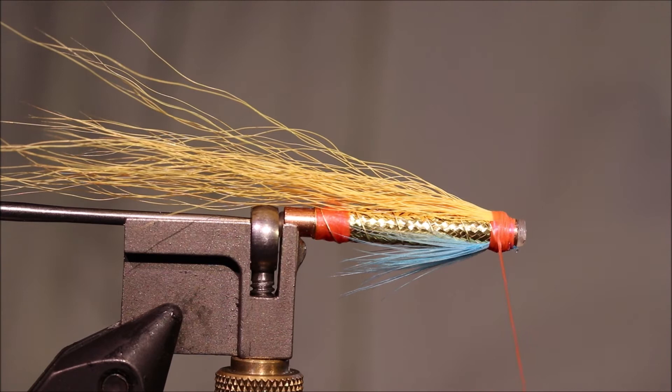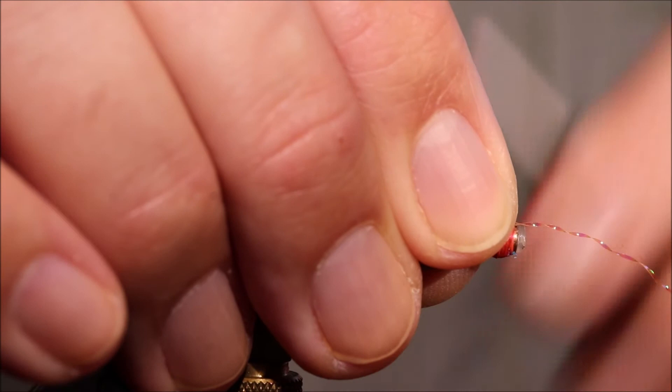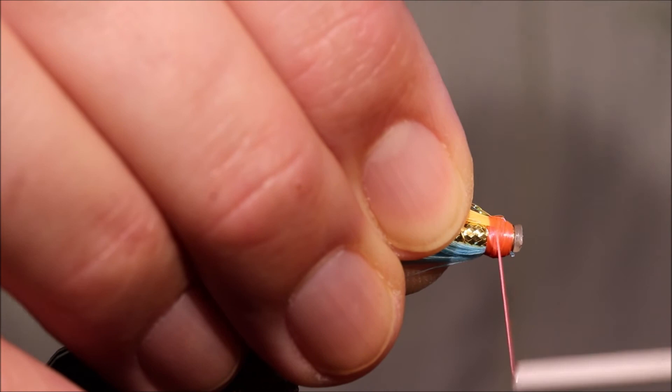And then the last thing is just a wee bit of flash. We'll take a single strand of orange crystal hair, crystal flash, something like that. One of these twisted flash fibers. Tie it in on your side, bring it across to mine and lock it in. And because it's folded it'll never pull out.